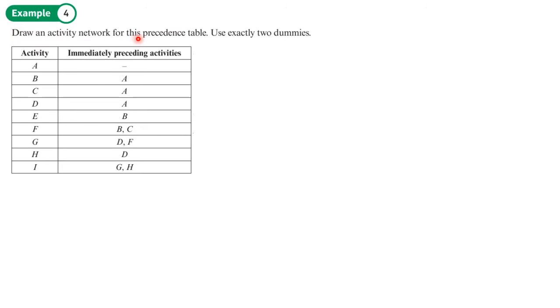Example four: draw an activity network for this precedence table. Use exactly two dummies and often questions will say how many dummies they want you to use. So you need to make sure we don't use any more than two. Now we can probably work out from the table why we need to. Let's have a look here. You see that activities E and F are both dependent on B but F is also dependent on C so we'll just circle that, we're going to get a dummy occur here and then here as well G and H are both dependent on D but G is also dependent on F so there's where the second dummy occurs.